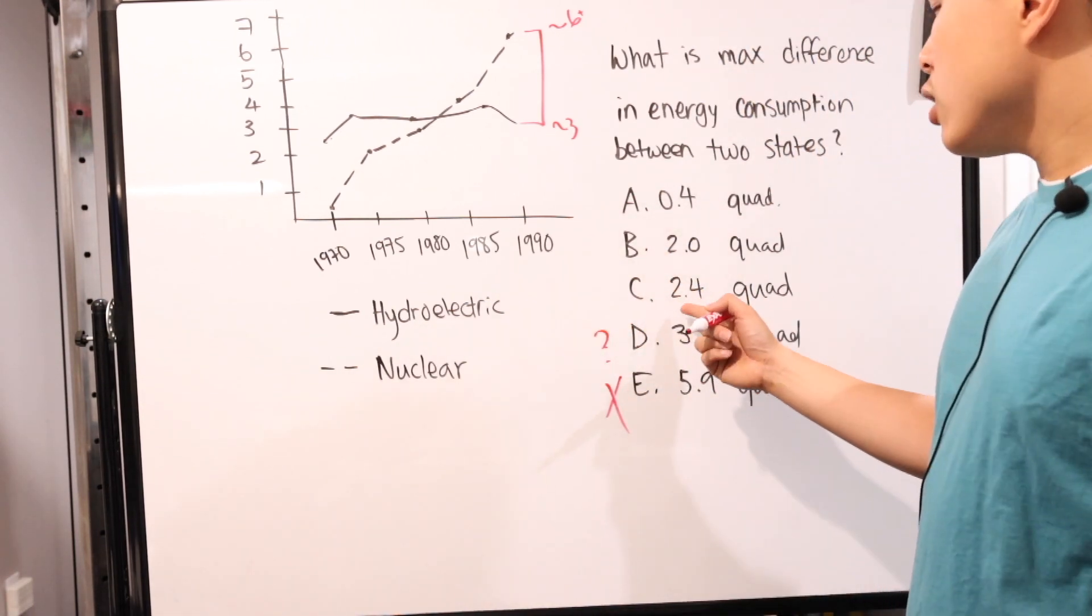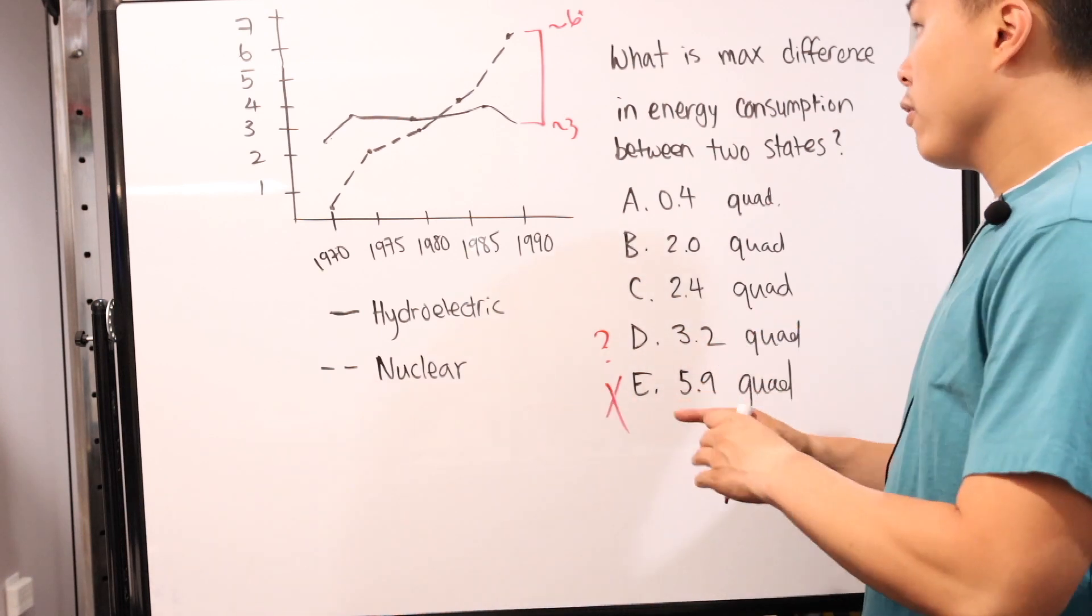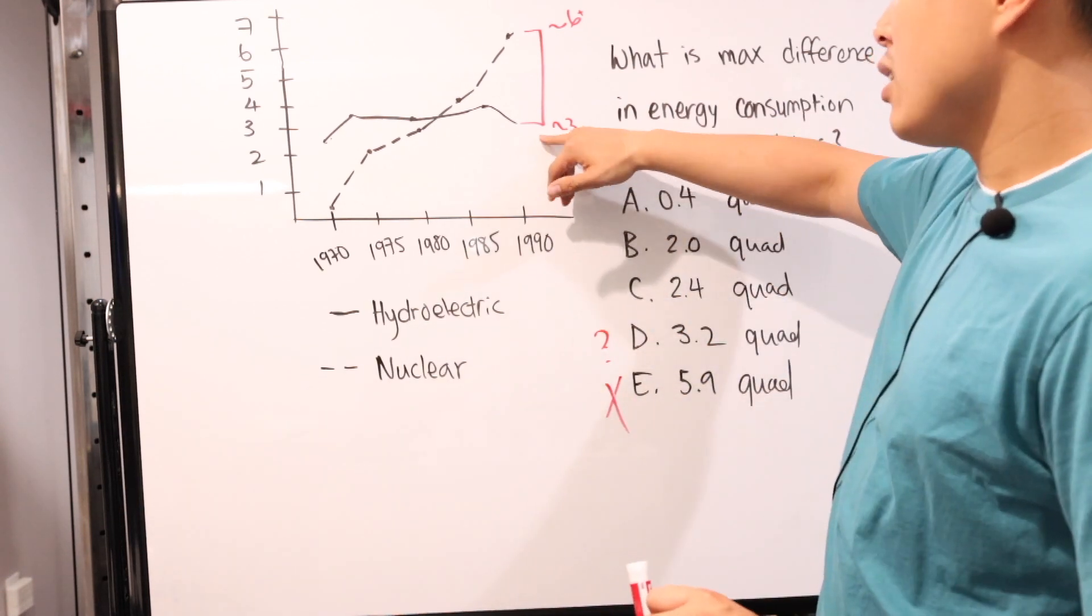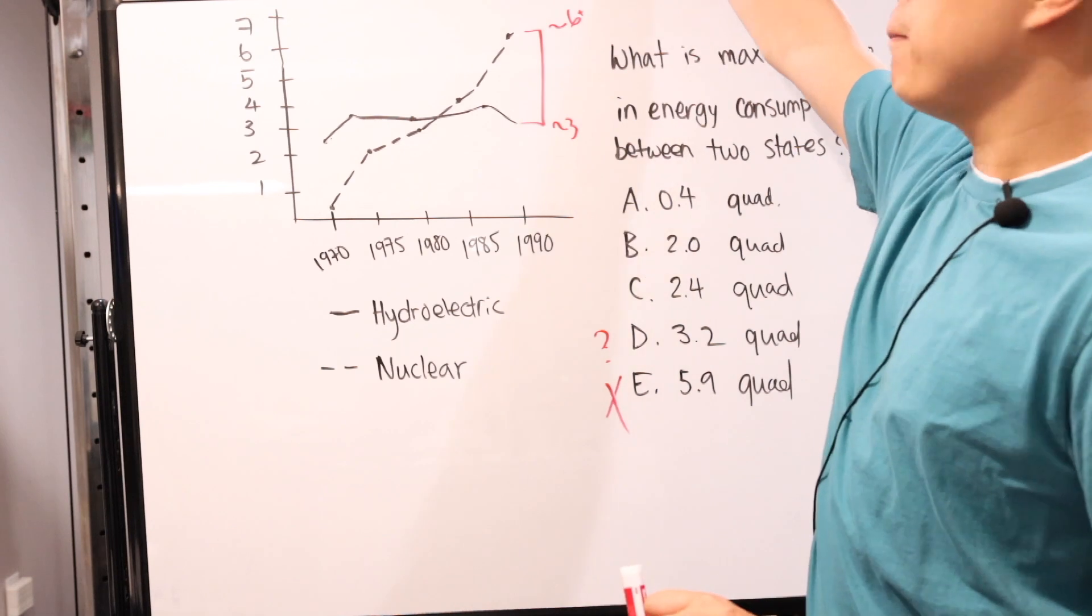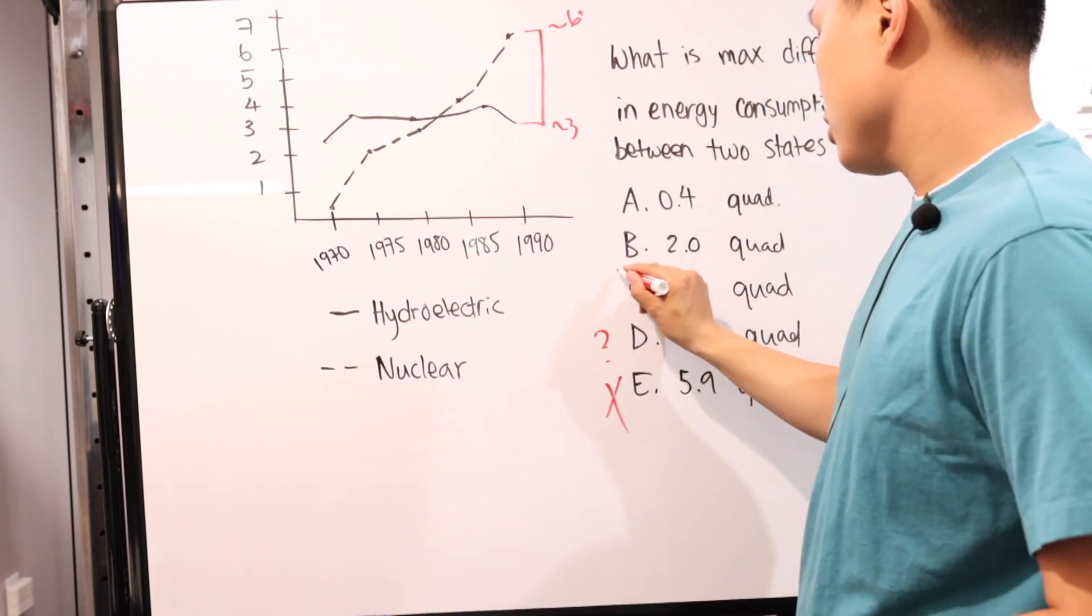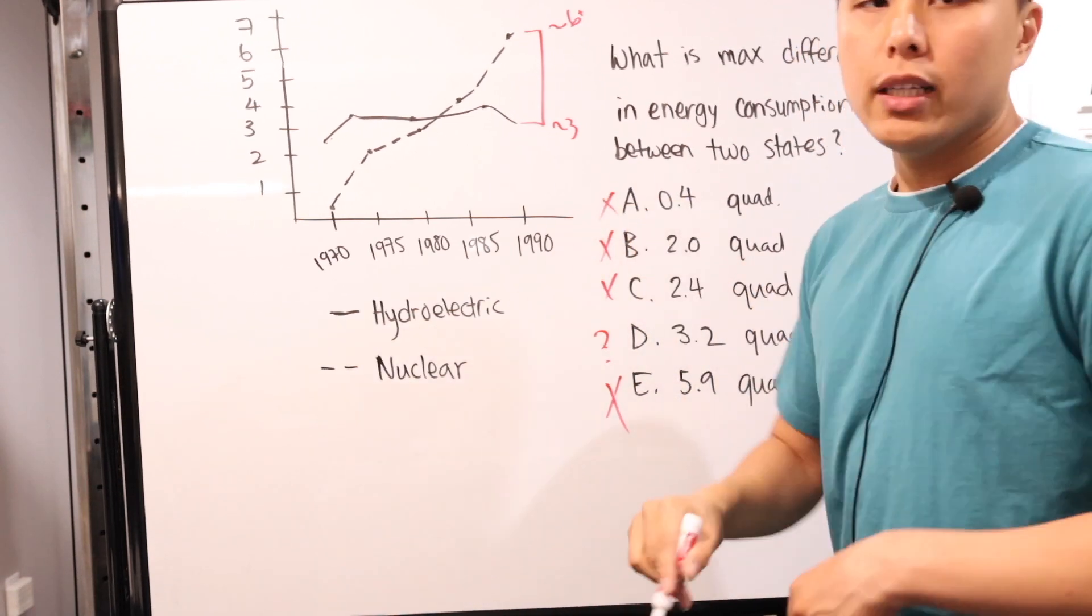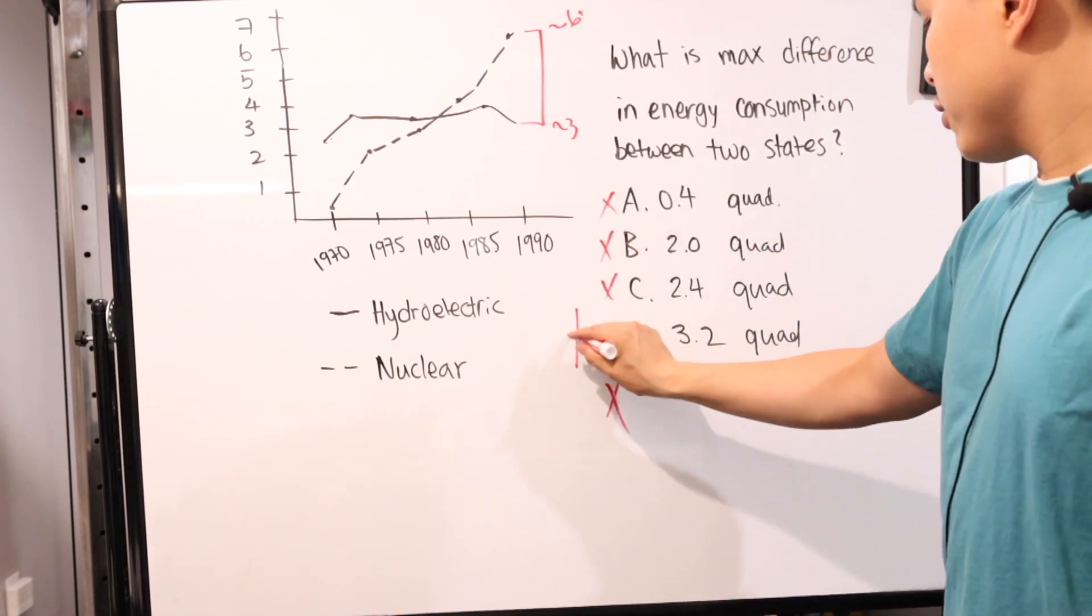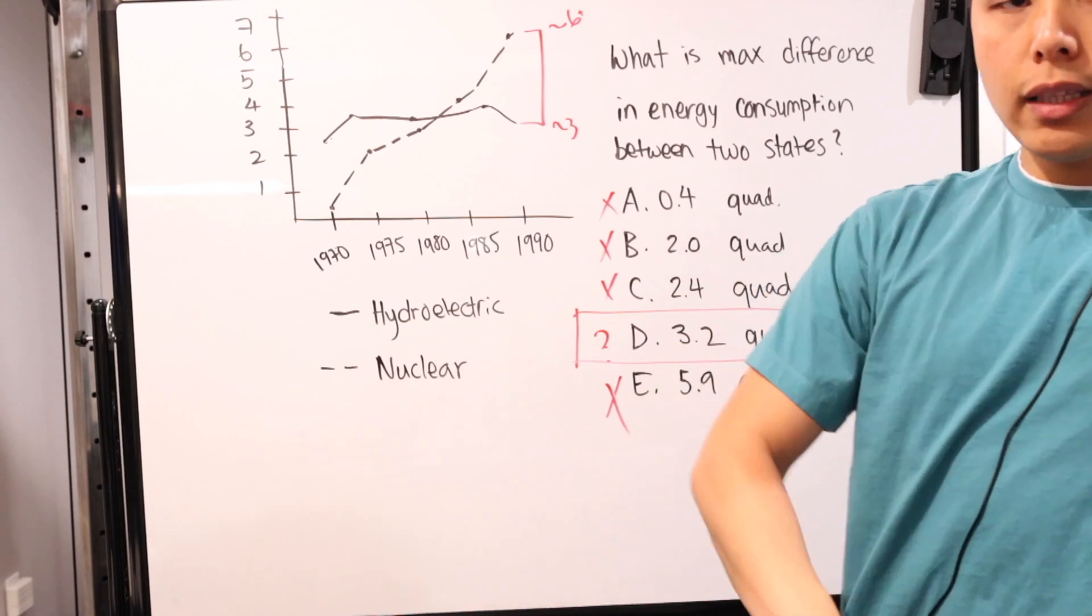But since this is about three, this is a little bit above six, it's probably a little bit bigger than two. And just from then on, because we know everything else is smaller, we immediately can figure out this is the answer.